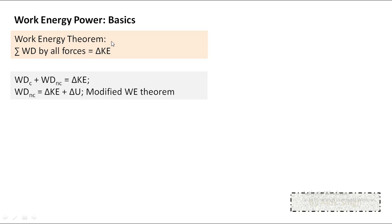In the original work-energy theorem, all forces are treated similarly and there is no concept of potential energy. In the modified form, we first identify conservative and non-conservative forces. Work done by non-conservative forces equals change in kinetic energy plus change in potential energy, which together is the change in mechanical energy. If work done by non-conservative forces is positive, mechanical energy increases; if negative, mechanical energy decreases.